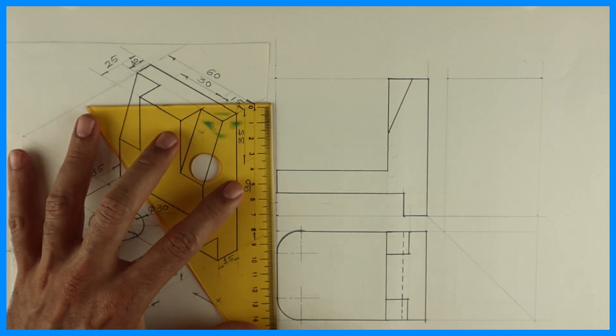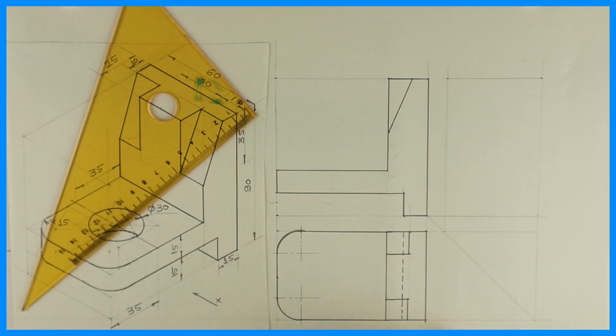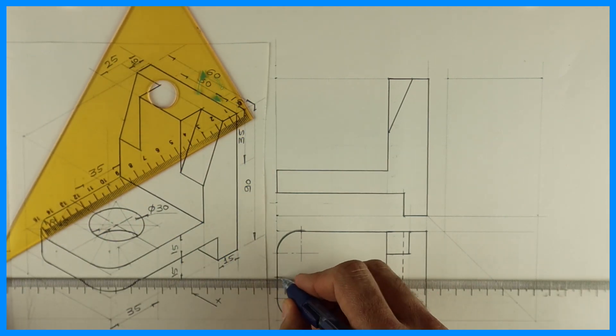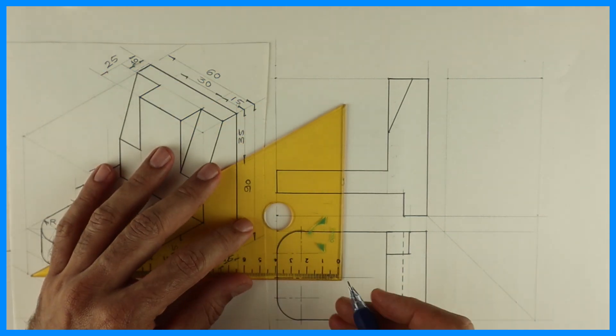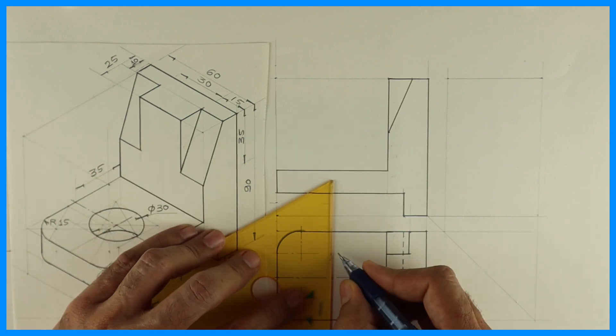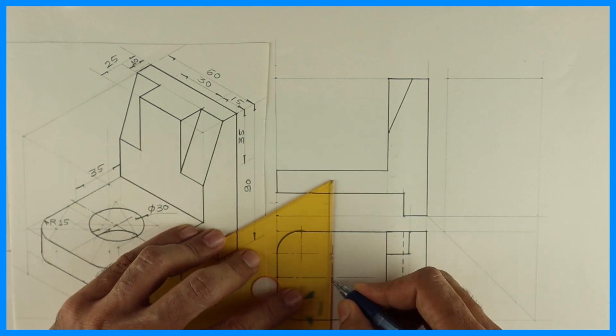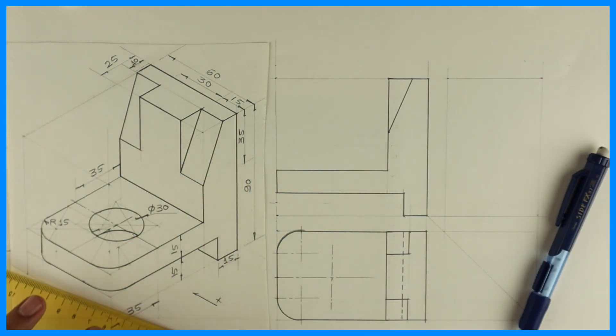Now we'll draw this circle. For that, we'll find out the center point. We'll take 35mm and again we'll draw a center line and we'll draw a circle from there of radius 15.